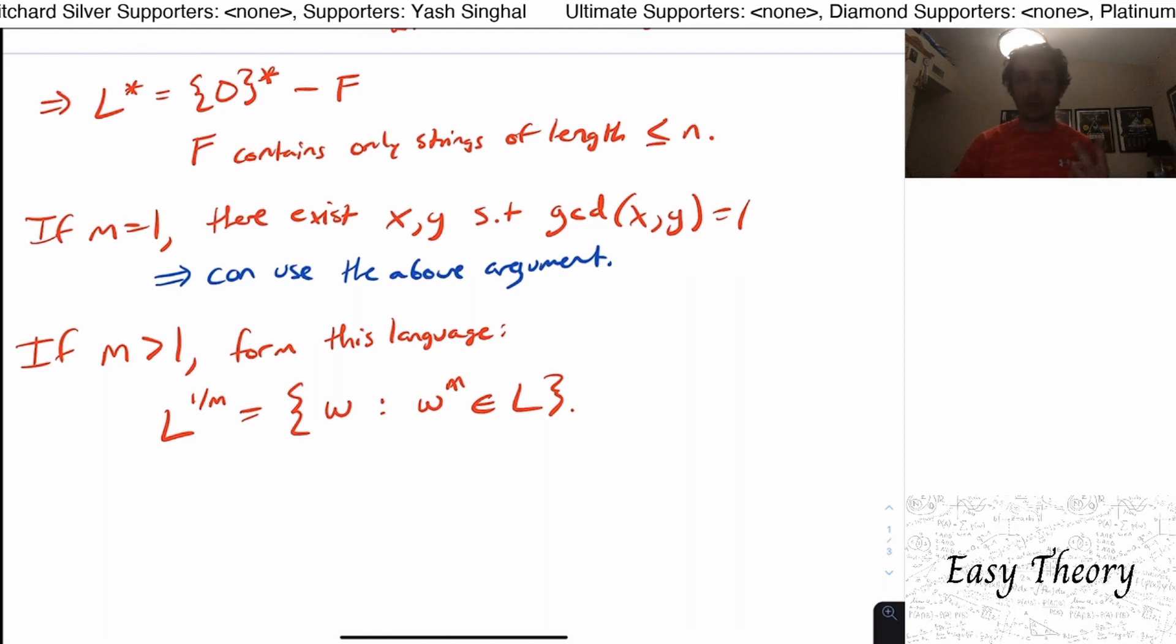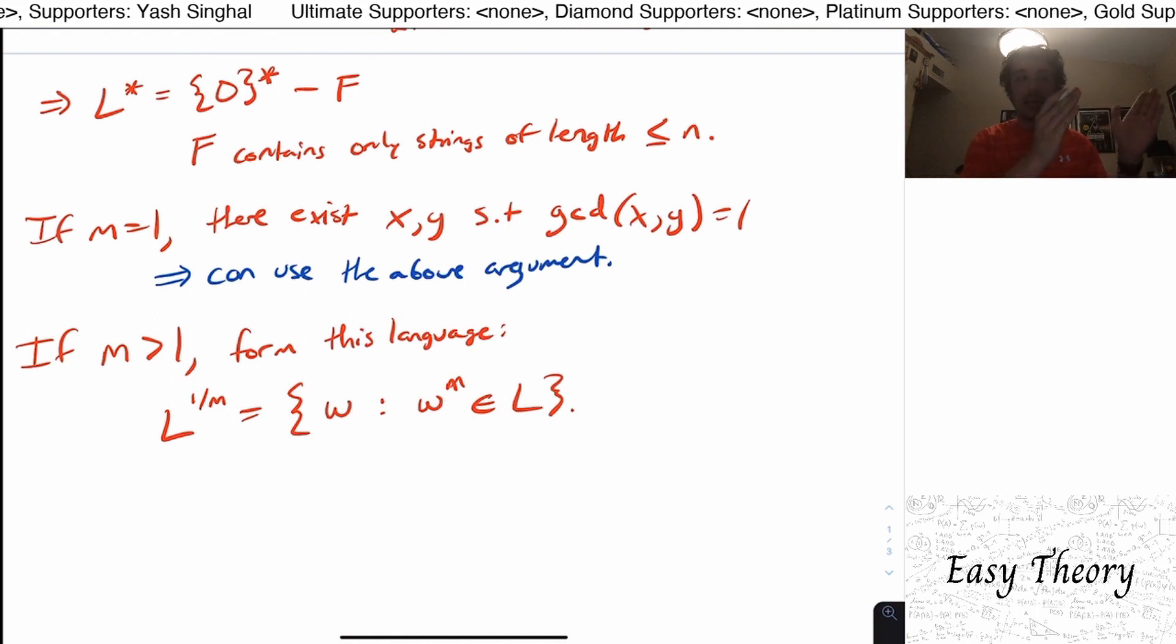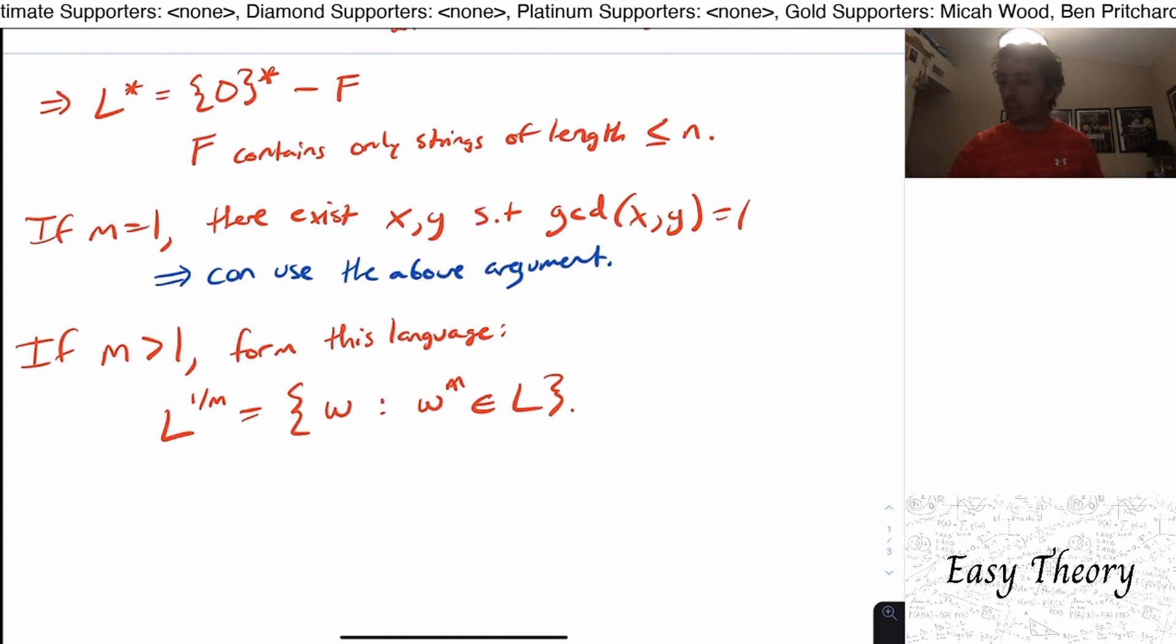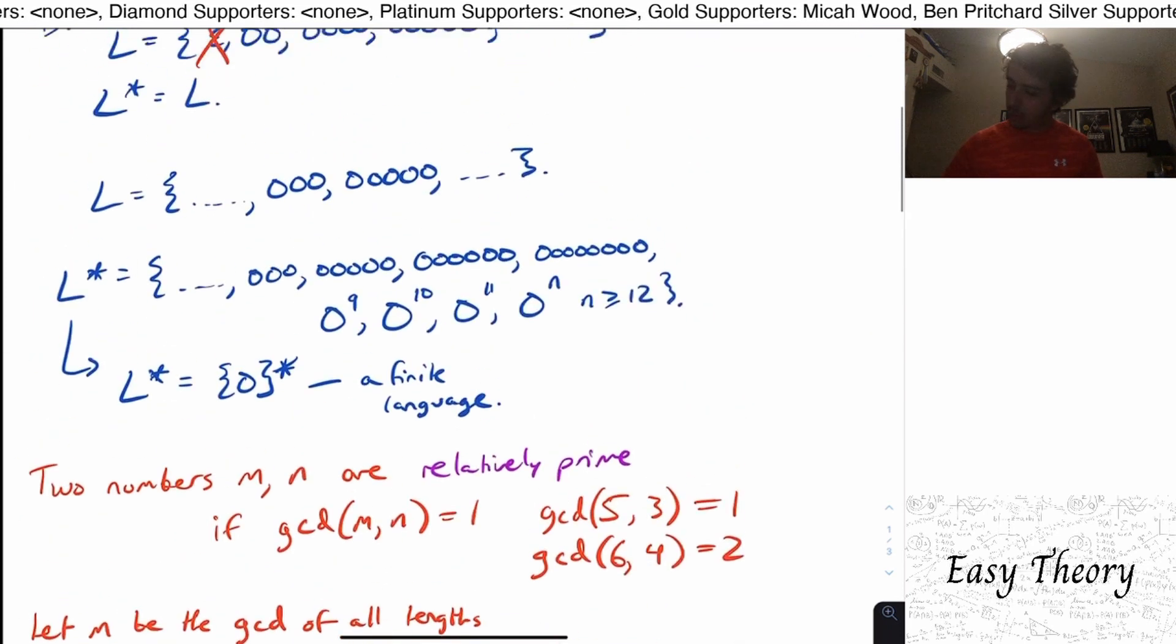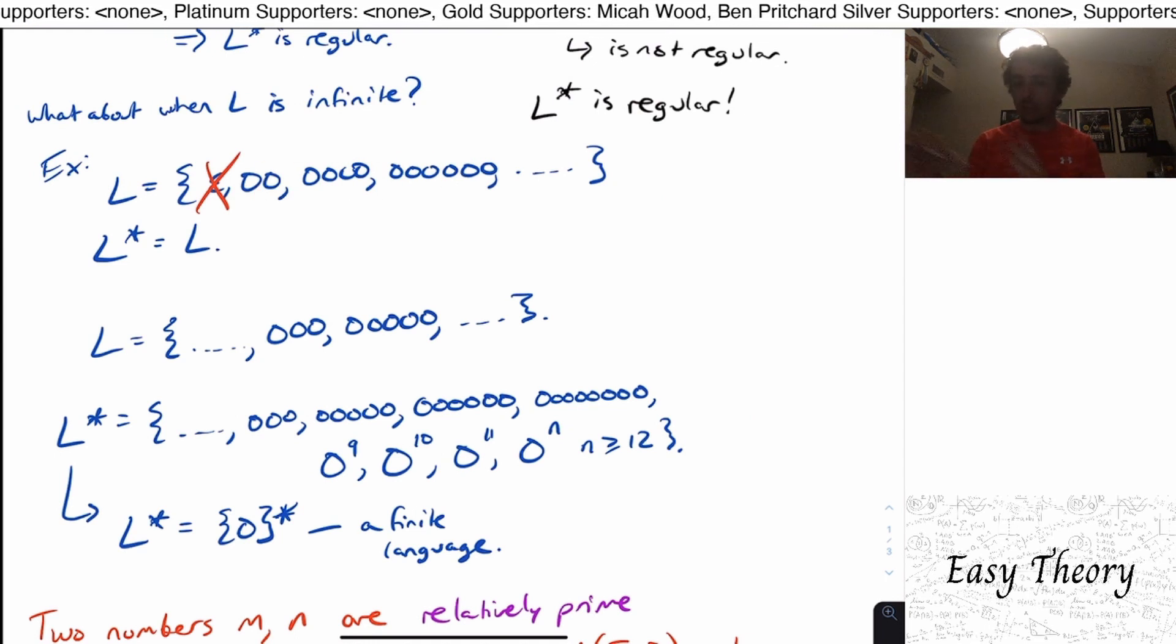Because this means that every single number, every single string has length that is a multiple of M. Because if it wasn't, then there would be two strings that are relatively prime in length to each other. So every single string in here, what I'm going to do is instead of having it be some number M, a multiple of M, I'm just going to reduce the lengths by dividing by M. Because every string in the language has length that is divisible by M.